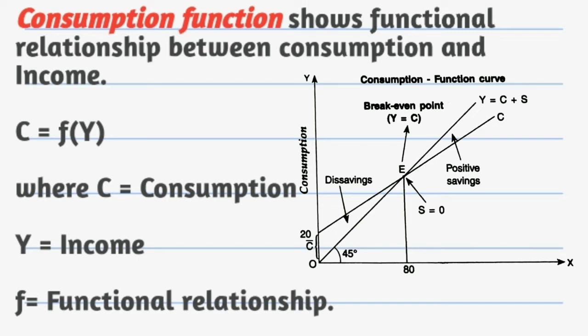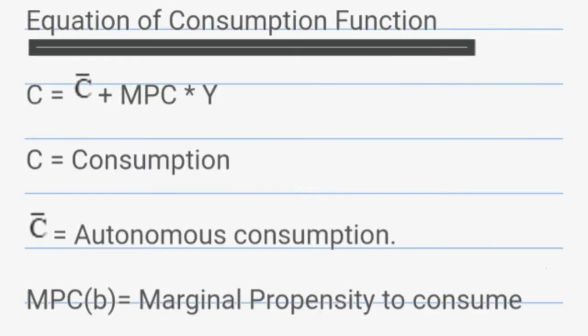The third stage is when the income increases, the consumption also increases but less than proportionately. This is because when a person's income increases he tends to save more than to consume and that's why the increase in the consumption is less than proportionately. Now we move on to the equation of consumption function. The equation is C equals to C bar plus MPC into Y. C is the consumption, C bar is the autonomous consumption, MPC is marginal propensity to consume and Y is the income.